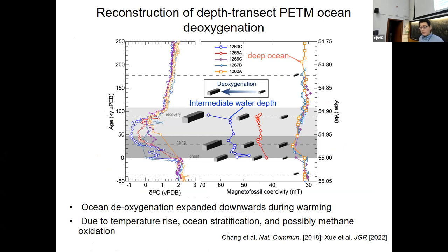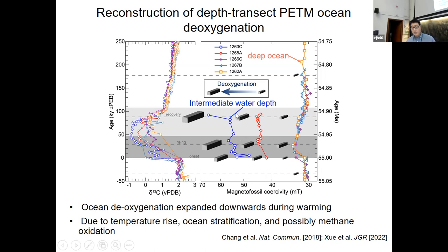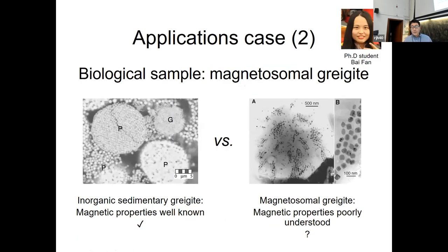Here is the summary of results. We have used the magnetofossil properties to trace what happened during this warming event. At different water depths, the ocean experienced deoxygenation — at intermediate water depths and also the deep ocean. During this time, as temperature rose, because of increased respiration and ocean stratification, we would expect ocean deoxygenation. And we see it.